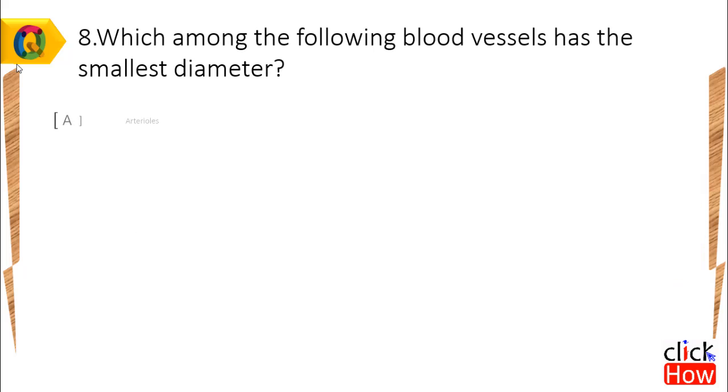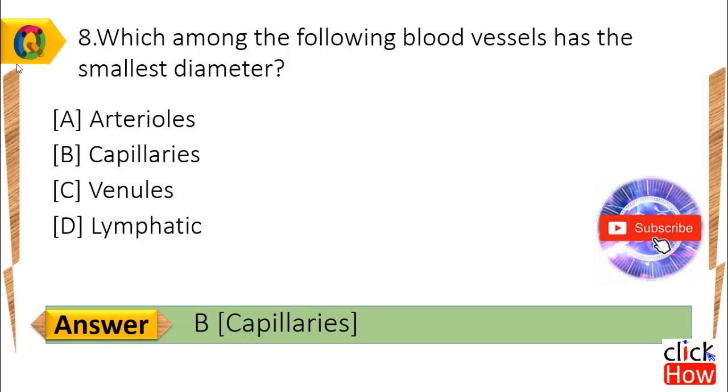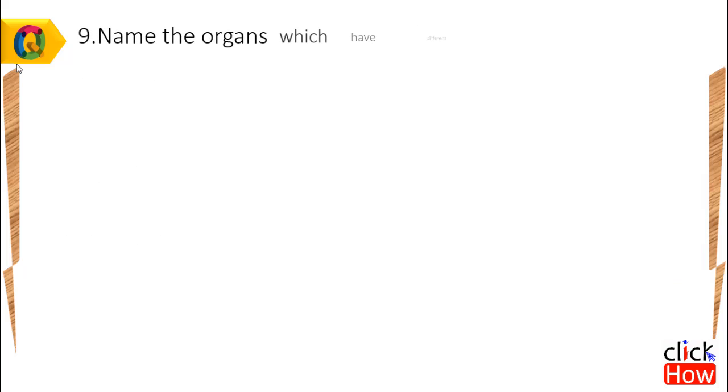Question 8: Which among the following blood vessels has the smallest diameter? Option A) Arterioles, B) Capillaries, C) Venules, D) Lymphatic. Answer is B, Capillaries.